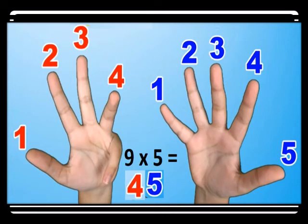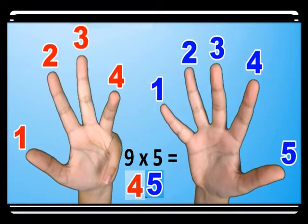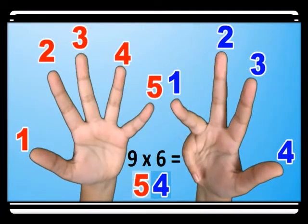For nine times five, you count to the fifth finger — one, two, three, four, five — then bend the fifth finger. You have four before it (the red ones) and five after the bent finger (the blue ones), so we have forty-five. Nine times five is forty-five.